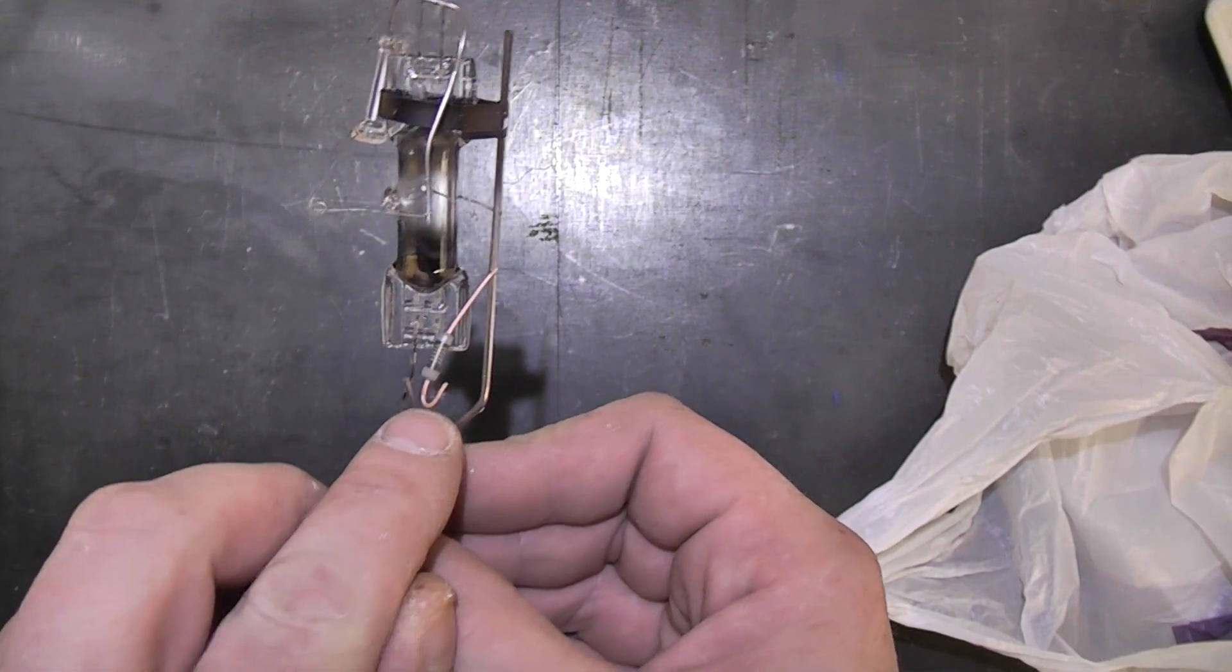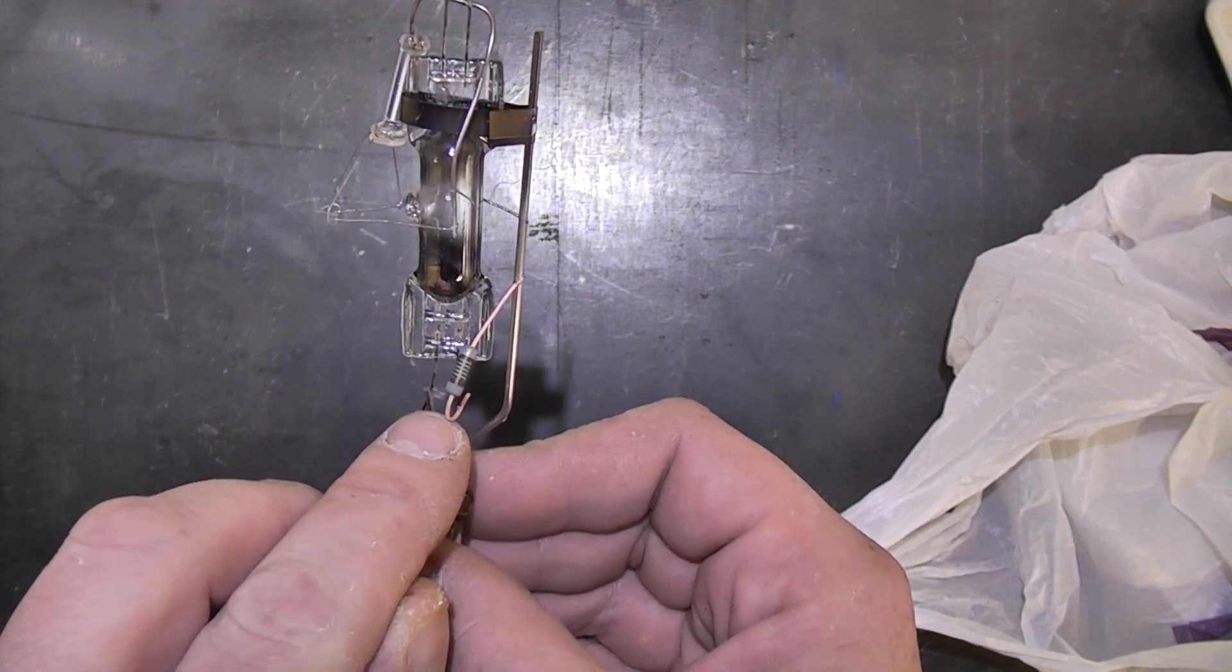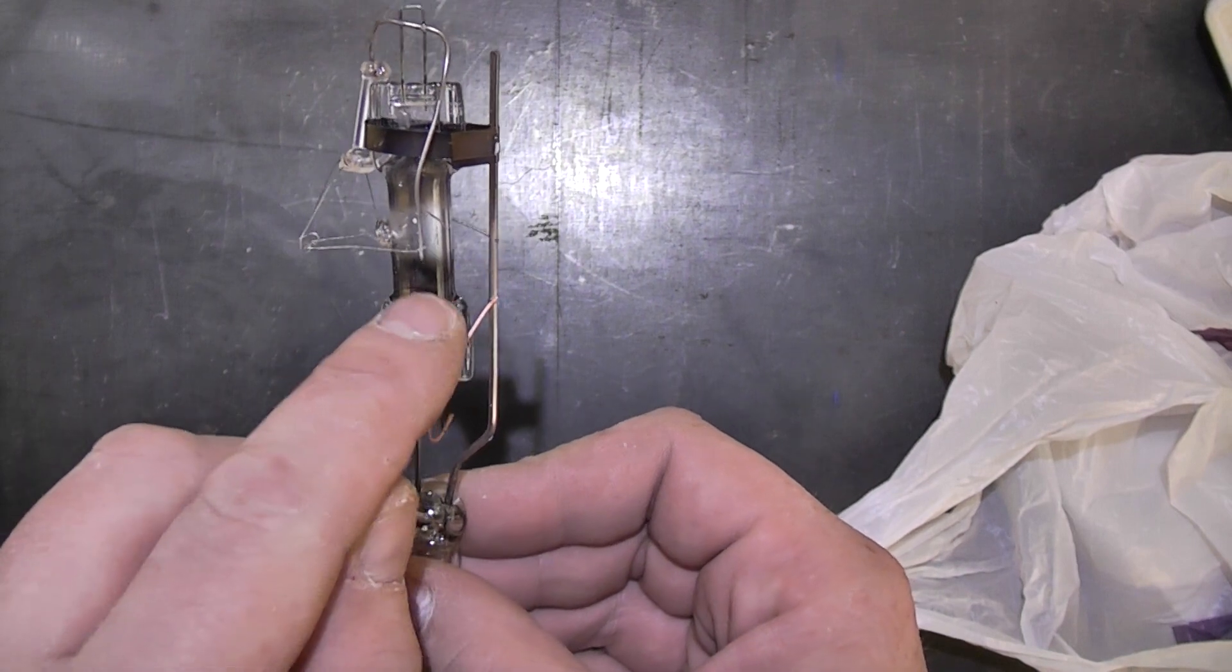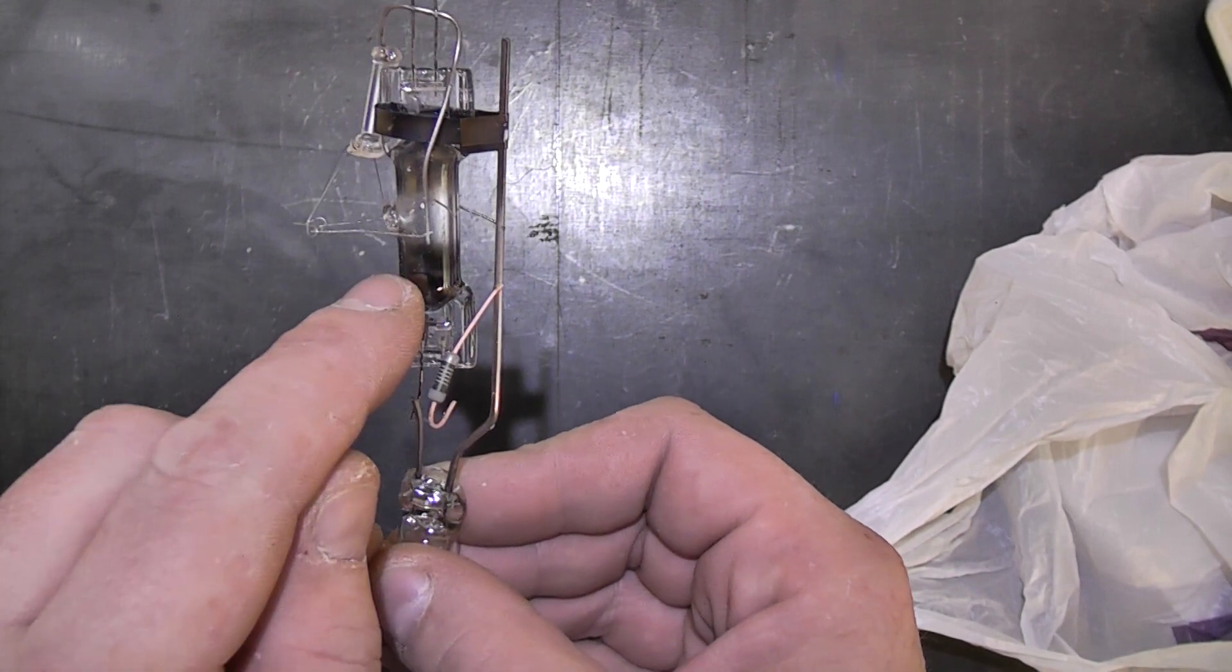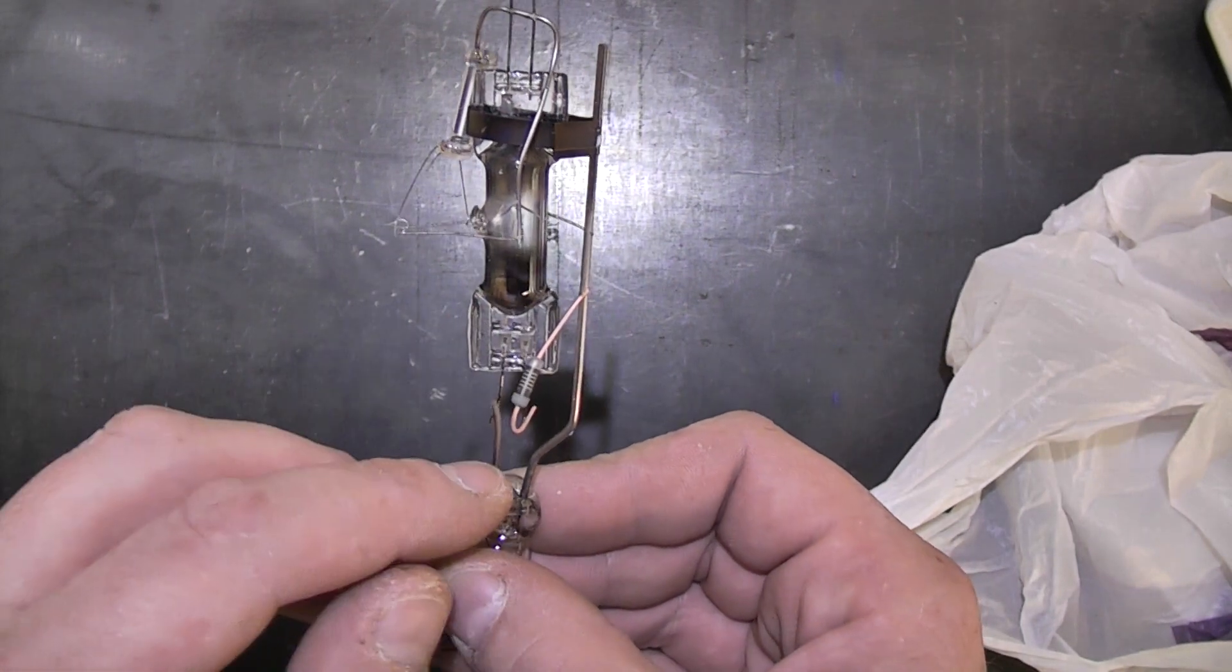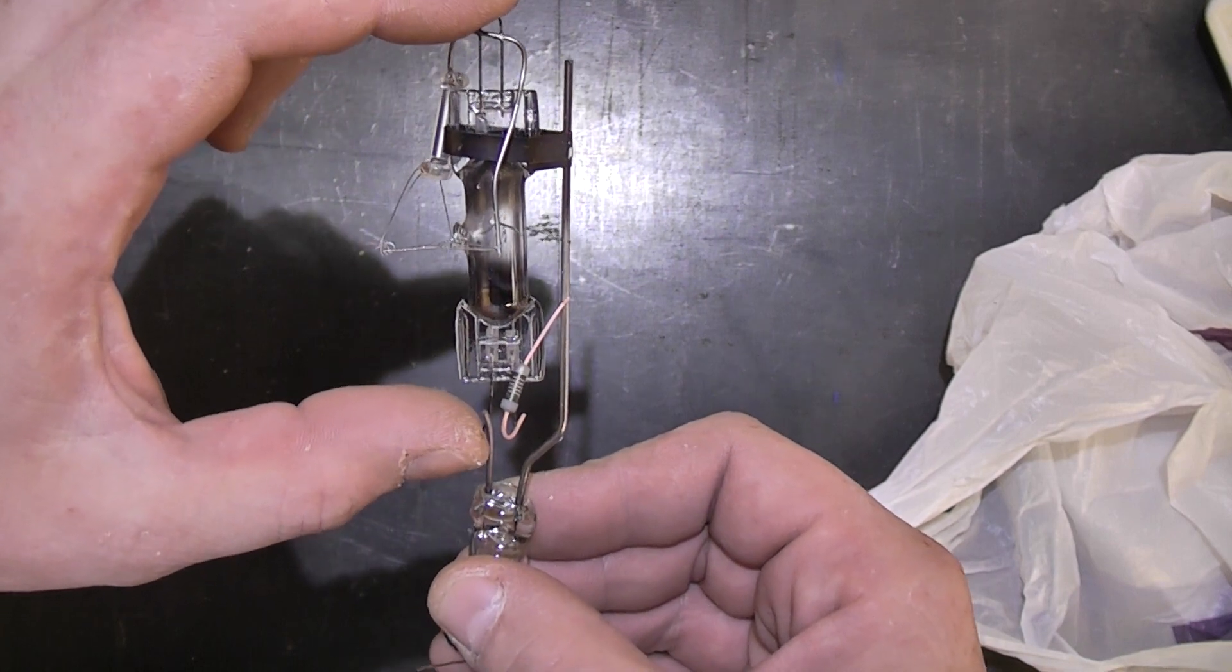And the mains voltage is applied between these two electrodes via this resistor. So what that does, that basically ionizes the gas inside the tube but not a lot of current can flow due to the resistor. But because the gas is ionized, a large current can then flow between these two electrodes.